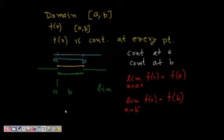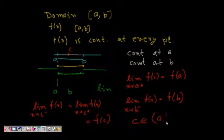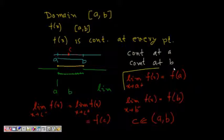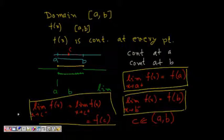For all other internal points, let c be some internal point in the open interval (a, b). Then the left-hand limit of f(x) as x tends to c minus should equal the right-hand limit as x tends to c plus, and both should equal f(c). This definition is used for interior points, while the one-sided definitions are used for the boundary points a and b.